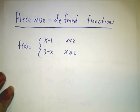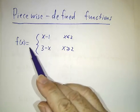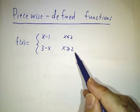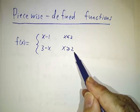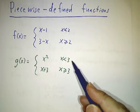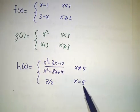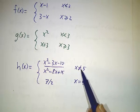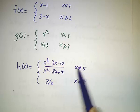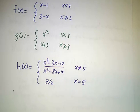Now we're going to talk about functions that are defined in pieces. For example, we're going to look at this function f which has one definition for x less than 2 and another definition for x bigger or equal to 2. And we're going to look at another function where the cutoff is at 3, and a third function that has a special definition at x equals 5 and a different definition for all values of x other than 5. You may recognize this as the rational function that we looked at in the last video.